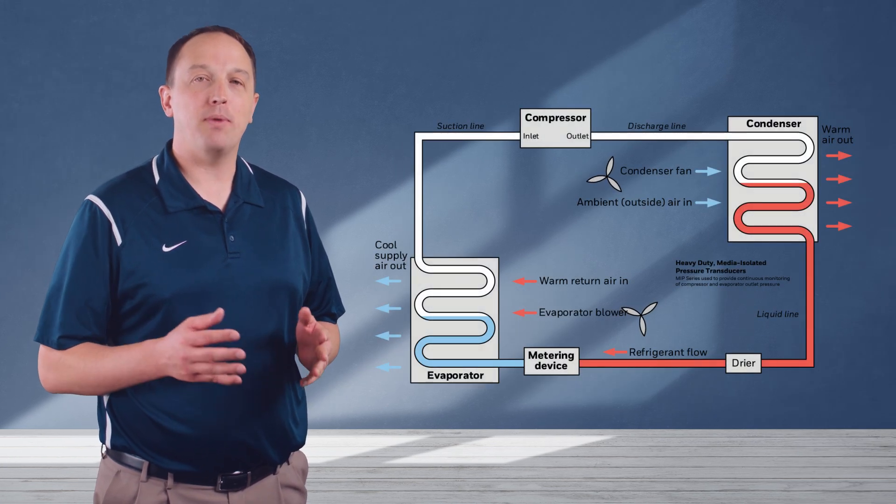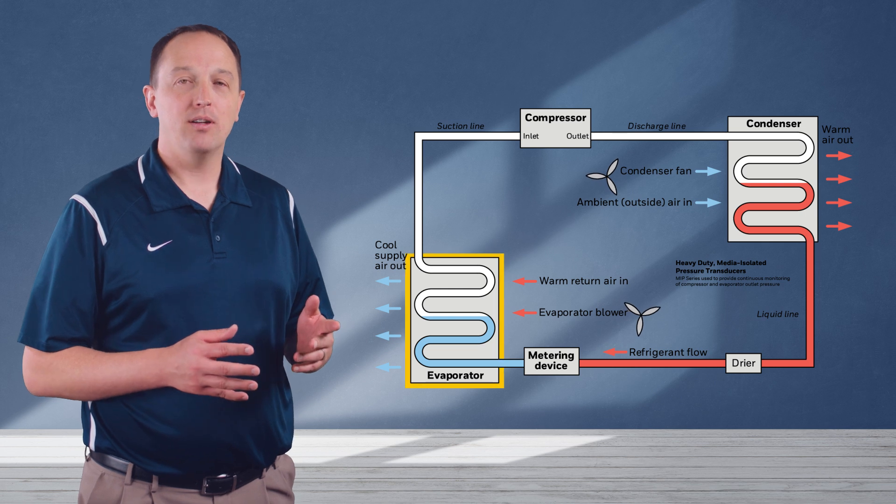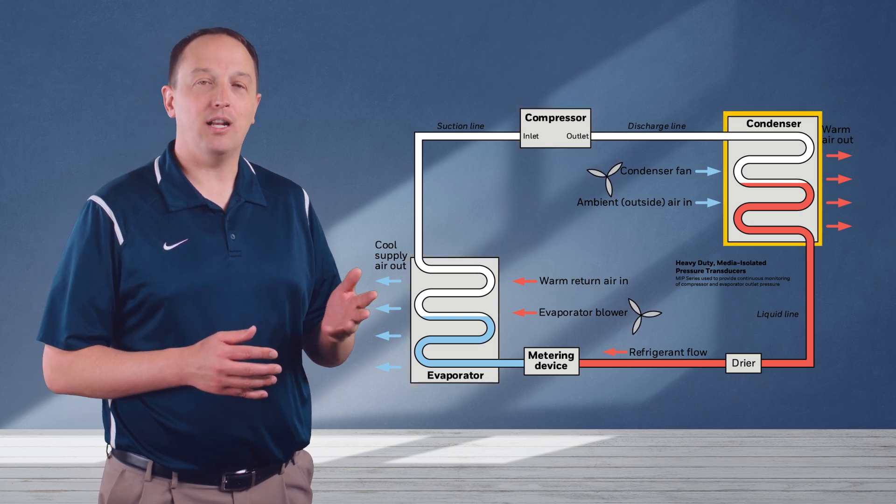Industrial refrigeration units include four basic components: an evaporator, a compressor, a condenser, and a metering device.